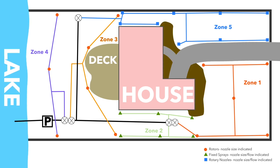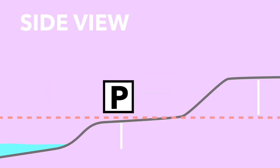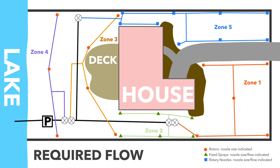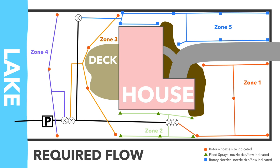Let's work through an example: selecting a pump for an irrigation system at a lake house. The property has significant elevation changes — it rises four feet off the lake, levels at the deck, then rises an additional eight feet to the street. The first step is calculating the required flow by finding the zone with the highest flow rate. Zone 1 has four rotors at 1 GPM each and one at 4 GPM, totaling 8 GPM.